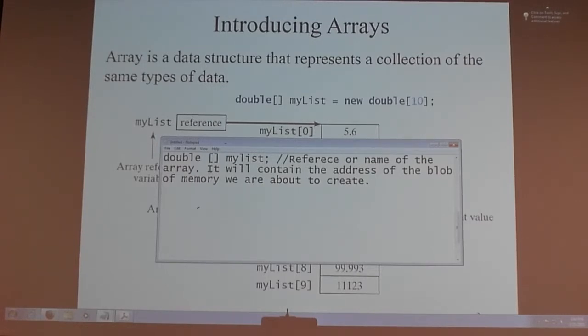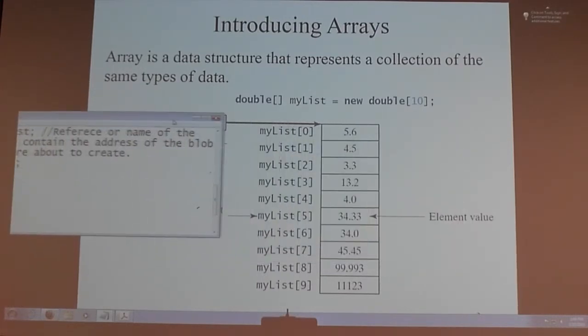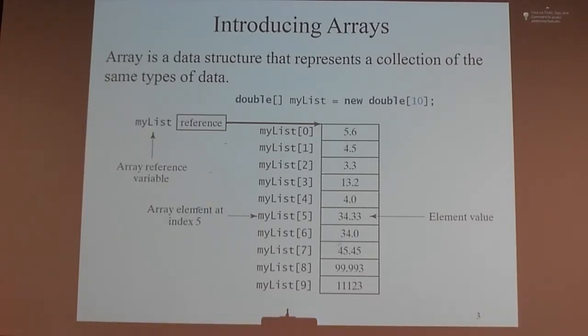When I say new double 10, that basically creates this little blob of memory. And so I have 10 cells, starting with index location 0, all the way to index location 9. Am I doing okay so far? I have 10 elements in this array. And my reference, name of my array, myList, points to the first byte.